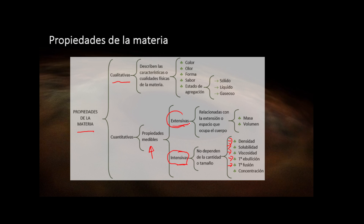Las extensivas, sin embargo, sí son dependientes del tamaño o espacio que ocupa el cuerpo. Por ejemplo, la masa: si digo un kilo de masa, sabes que es una bola grande, pero si digo 300 gramos, sabes que es una bola chiquita. Esta propiedad va a depender de la cantidad de sustancia. El volumen igual: 100 mililitros va a ocupar menos espacio que 1000 mililitros. Esos son los dos tipos de propiedades cuantitativas: intensivas y extensivas, que definen la situación de la materia.